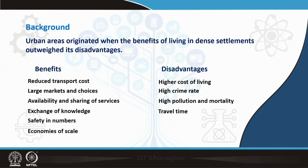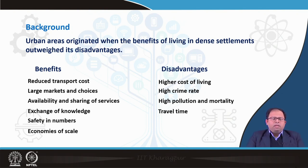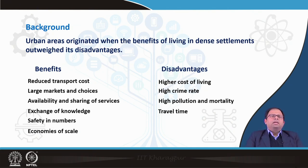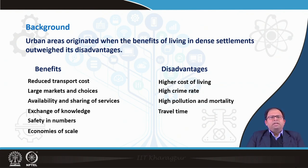When people came together, there were large markets in those urban areas, so the number of options and choices available to users increased quite a bit, leading to a lot of benefits of living in that particular area. Then there was availability of different kinds of services, and because services were shared between a large group, they became more affordable. There was also exchange of knowledge, safety in numbers, and economies of scale — when many people and businesses came together, that generated economies of scale.